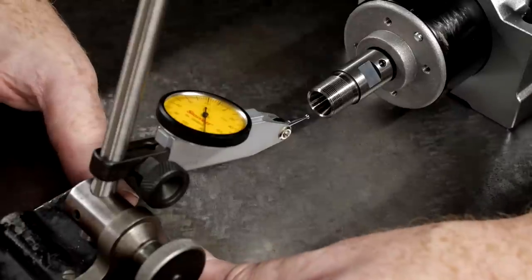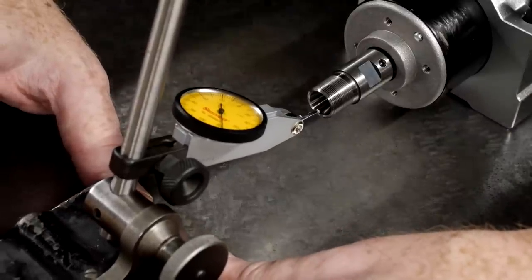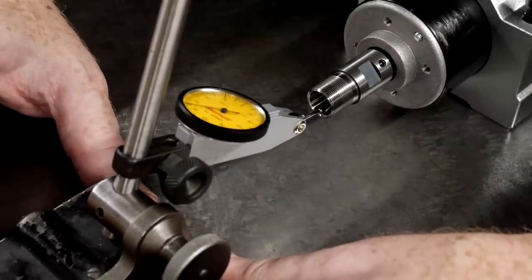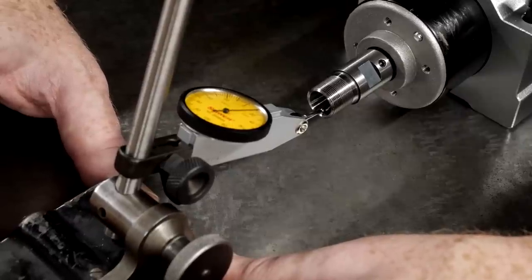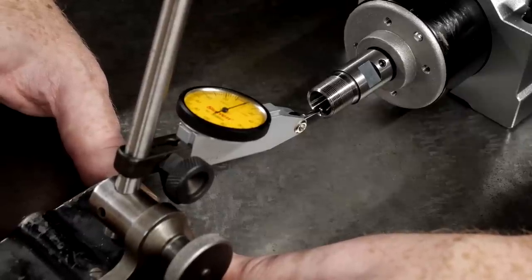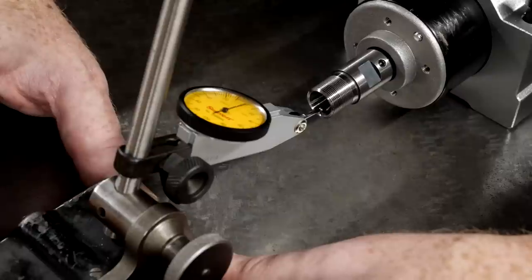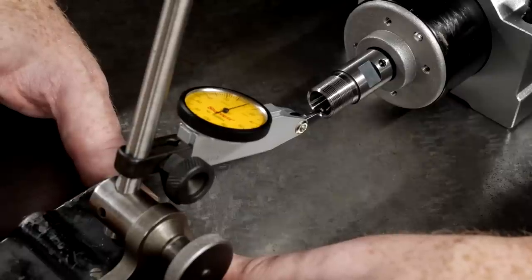This is a 0.2mm test indicator, which is way more sensitive than I can reasonably expect this spindle to be. To measure the runout, I'm looking for the lowest spot to tell me when the indicator lever is directly below the axis of the taper, which will give me the most stable reading. The contact point should be close to the outer edge of the taper to maximize the error reading.